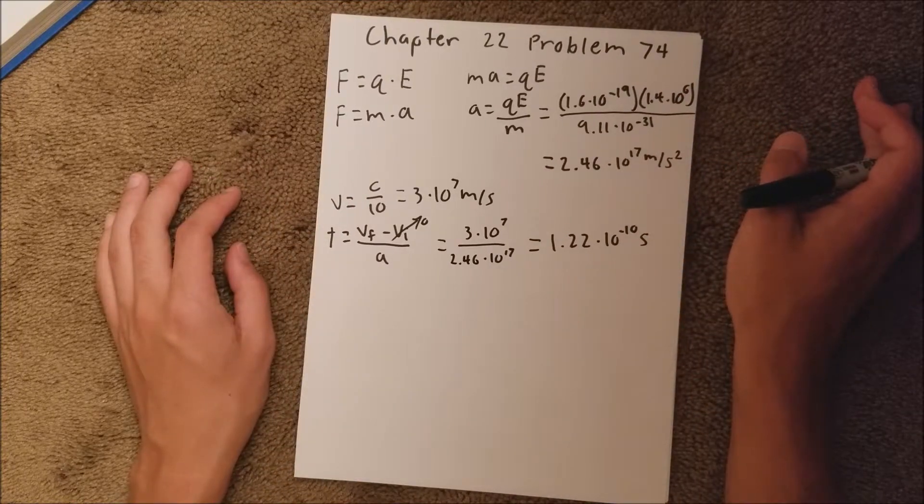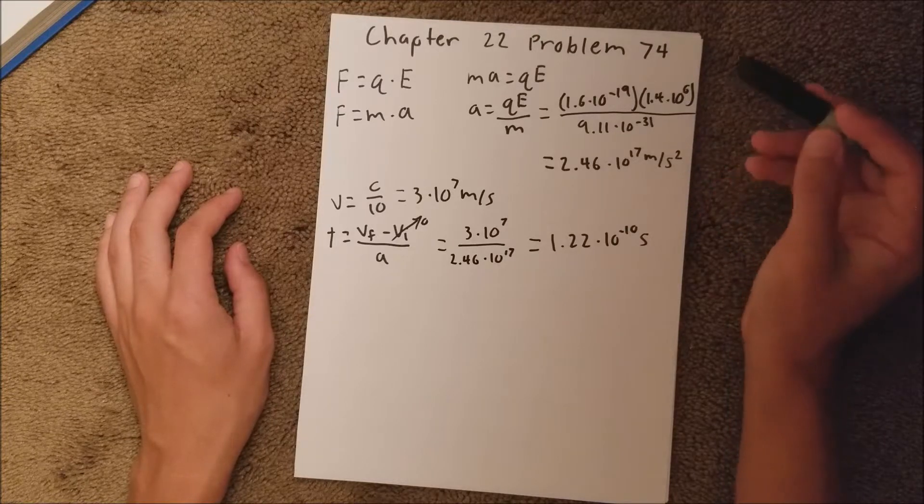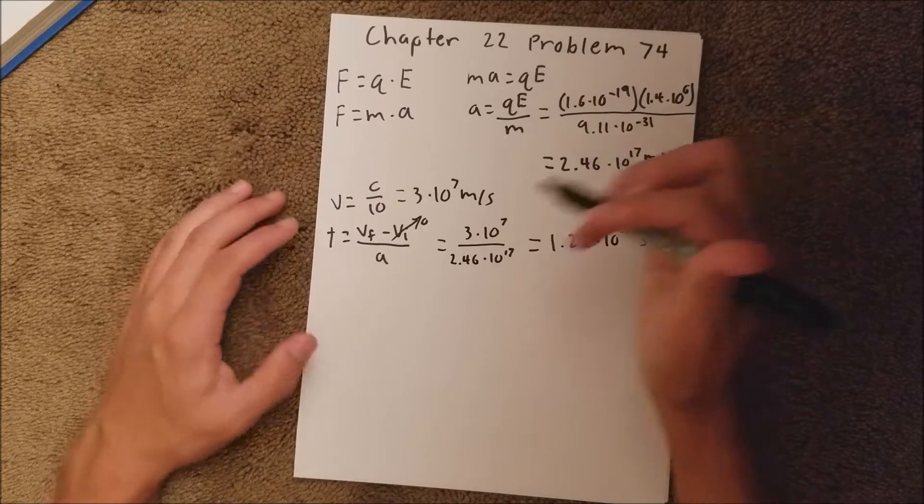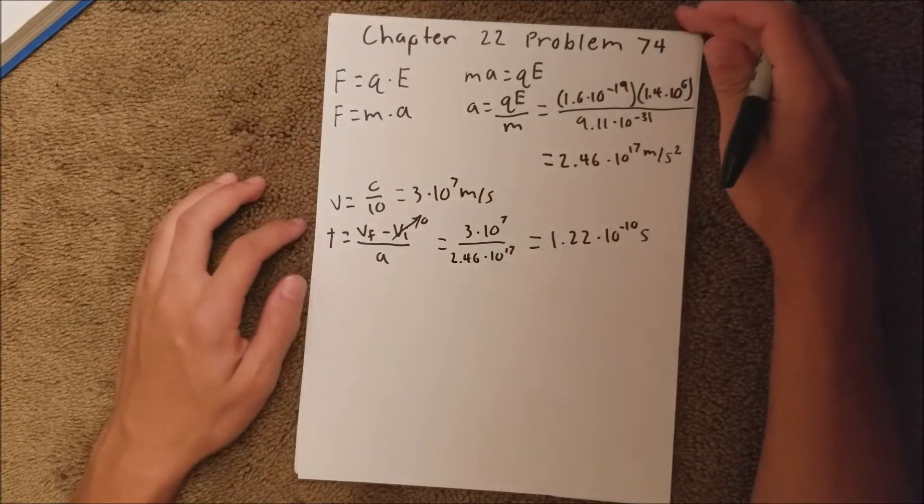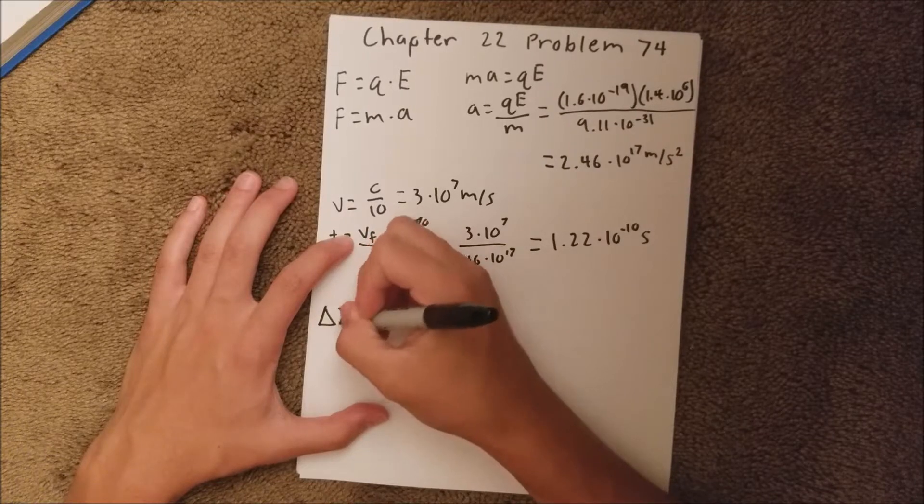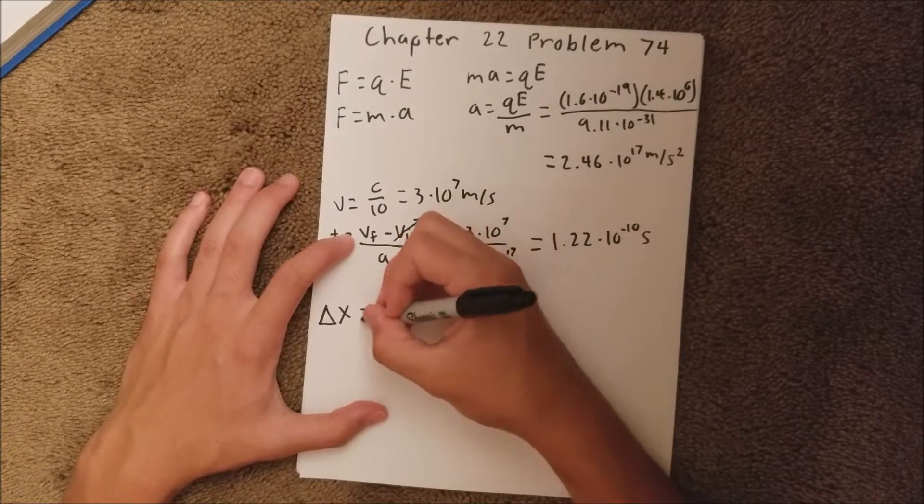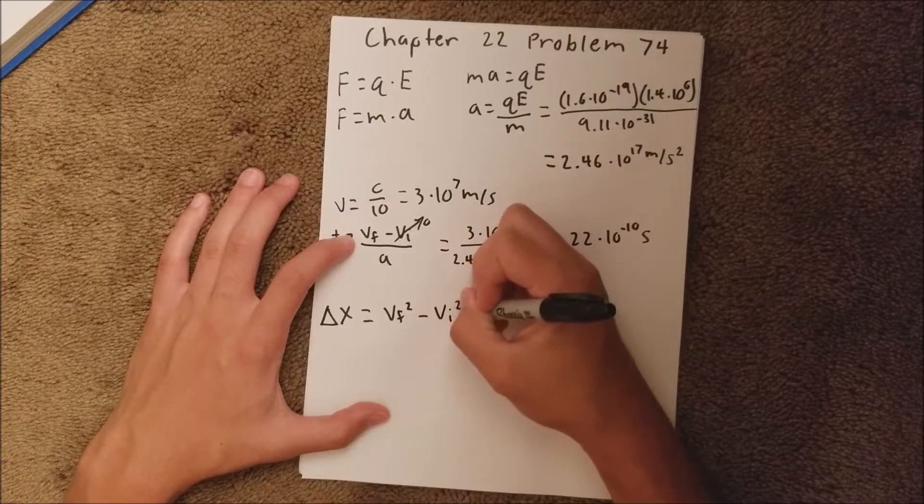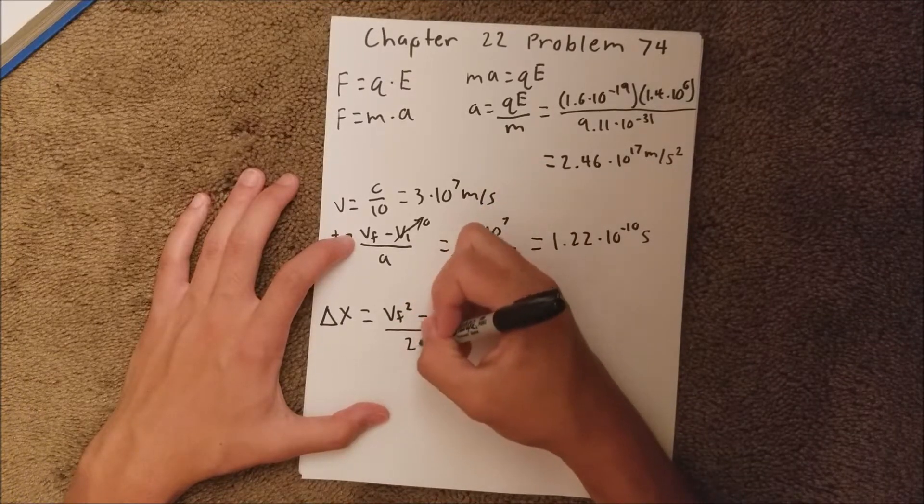And lastly, we need to know how far the electron would displace in that time. So again, we can use one of our equations from mechanics, and say delta x, or the change in x, is equal to velocity final squared minus velocity initial squared, all over 2a, 2 times the acceleration.